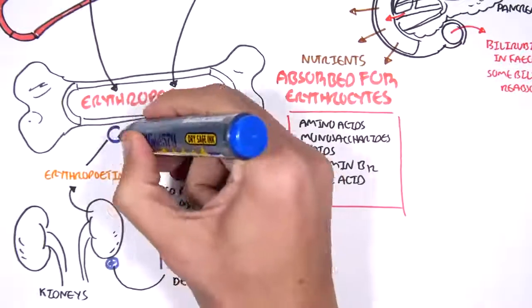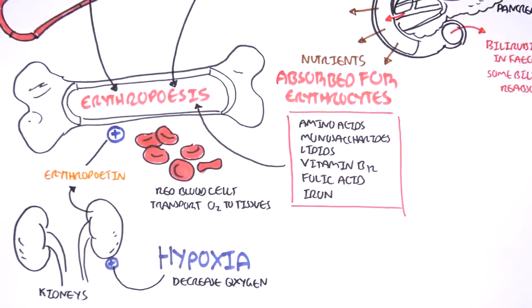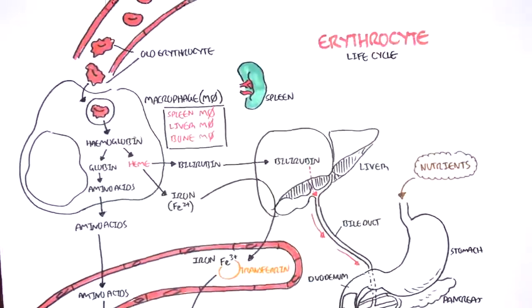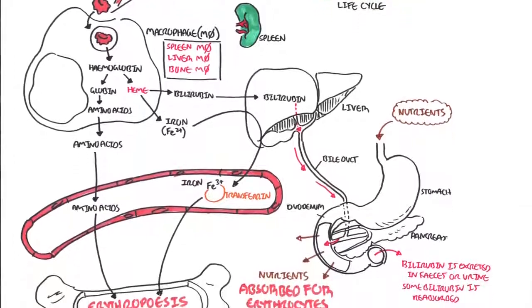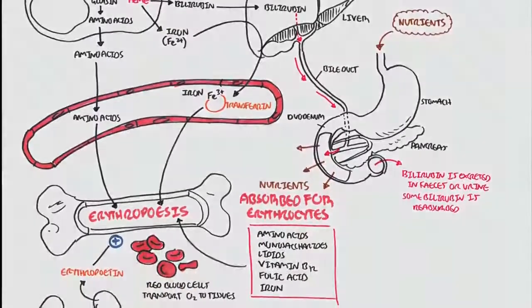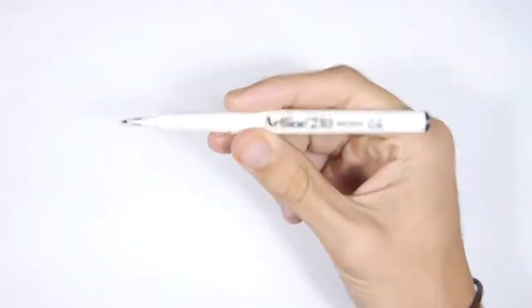And so, when you have kidney failure, for example, your kidneys are not able to produce erythropoietin. So, you usually develop anemia. I hope you enjoyed this brief video on red blood cell life cycle. Thank you.